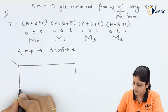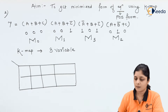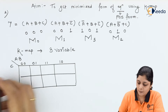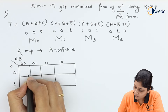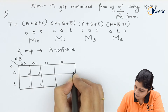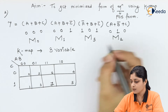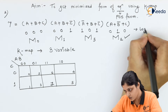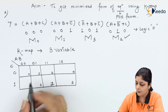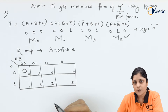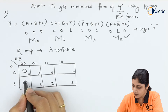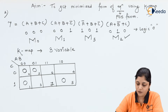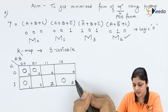Draw the three-variable K-map with A, B, and C. Write 00, 01, 11, 10 along the top and 0, 1 on the side. Inside the boxes write 0 through 7. Max terms are represented by logic zero, so we place logic zero in boxes 0, 1, 5, and 2.